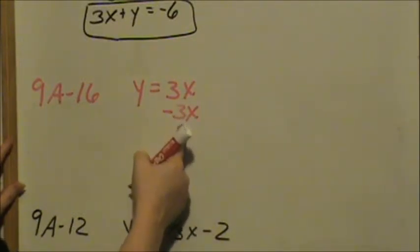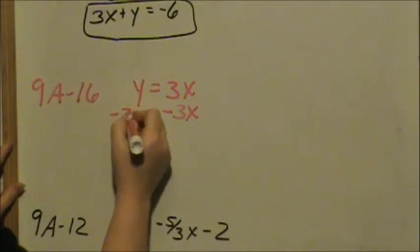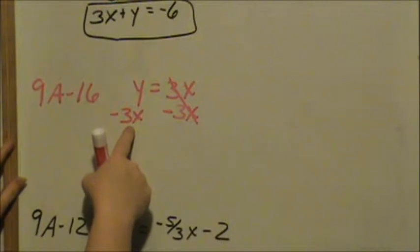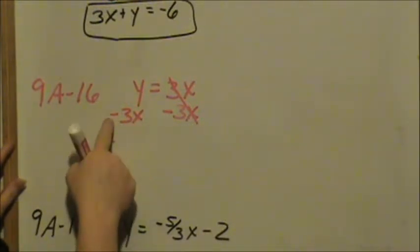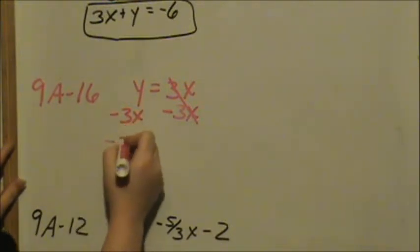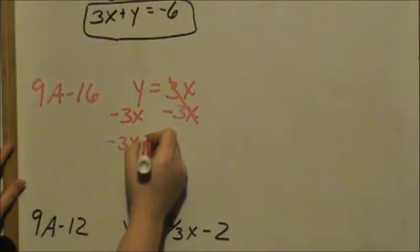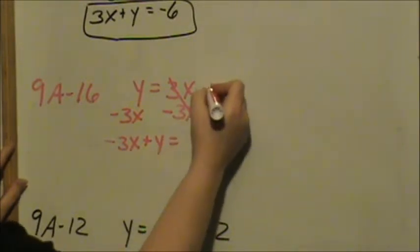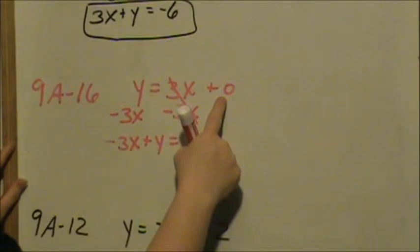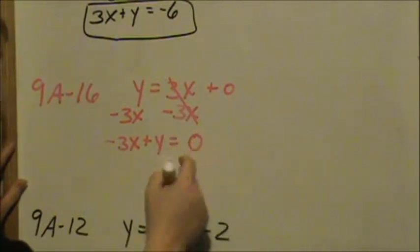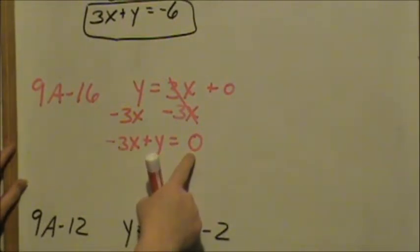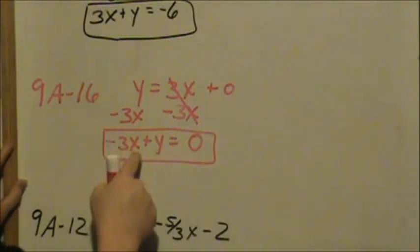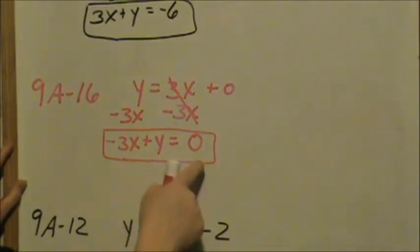Whatever I do to one side, I have to do to the other side. On the right it does cancel. On the left, I cannot add x's and y's together, so I leave my negative — don't lose your sign. My negative stays with the negative 3x, plus y equals — remember I had that plus 0 for the y-intercept, so there is still something over there: it's 0. 0 is still a number. So that is your standard form: x's and y's on one side, whole numbers on the other side, and no fractions.